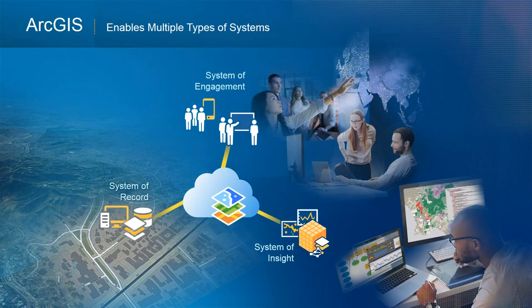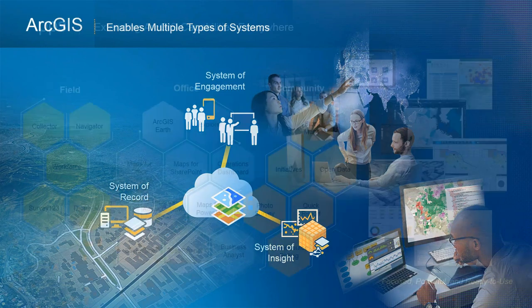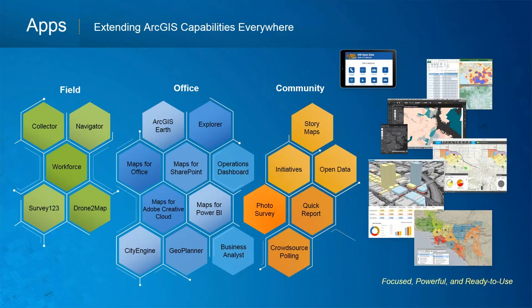ArcGIS is a system of systems — it's the system of record, the system of engagement, and the system of insight in a single platform. Enabling these systems across your organization helps you make better decisions, understand the status of work, allocate personnel more effectively, and work more efficiently. This platform is also for deploying apps — focused applications designed to run on any device to accomplish specific tasks in the field, in the office, and for engagement with your community. Apps are the modern way to deploy new capabilities to your organization quickly, giving you access to your system anywhere, anytime, and on any device.